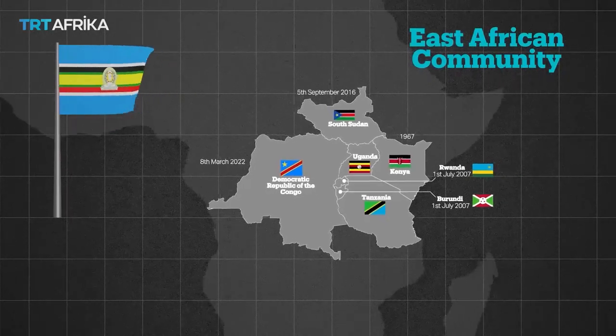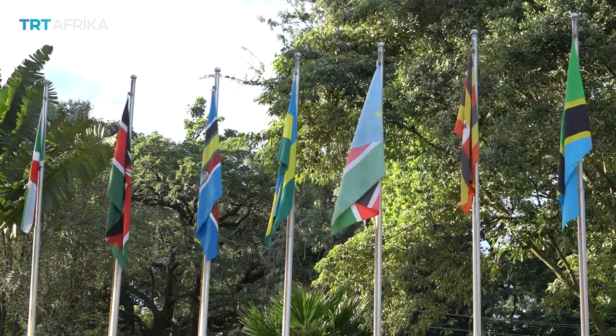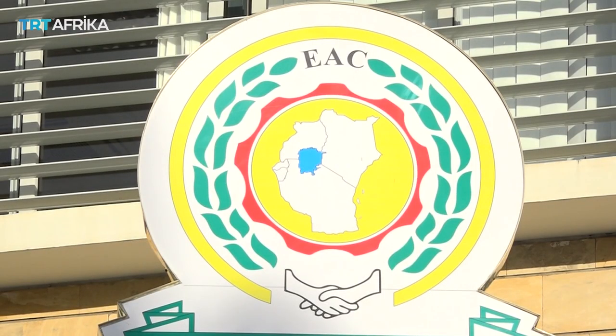We started by creating a customs union, which is integrated with a free trade area. The free trade area brings together a population of about 280 million people with a combined GDP of about 300 billion US dollars. This is a big market and that has strengthened the economic ties of member states in terms of utilizing the benefits which emerge out of this big market.